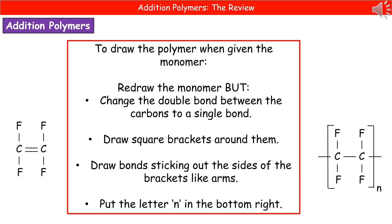If they give you the polymer and ask you to draw the monomer, we do the reverse. Lose the N, don't draw the square brackets, but copy the bit in the middle — just remembering to remove the arms sticking out the sides and change the bond in the middle to a double bond.